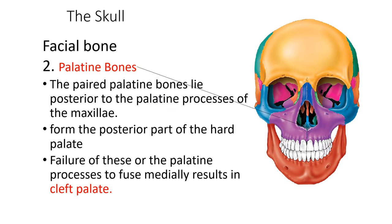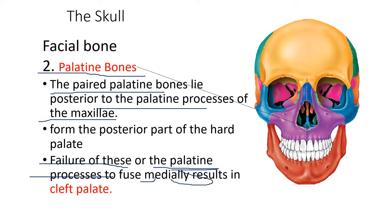Next is the palatine bone. The paired palatine bones lie inferior to the palatine process of the maxillary. Failure of the palatine process to fuse medially results in a cleft palate — where the palate is open, causing difficulty pronouncing words and a nasal-sounding voice.